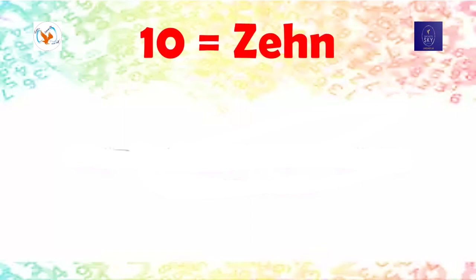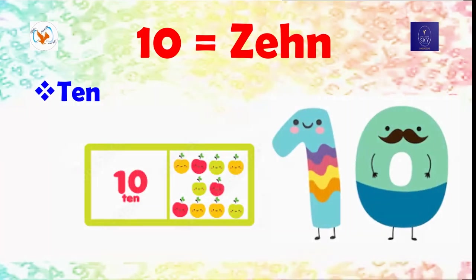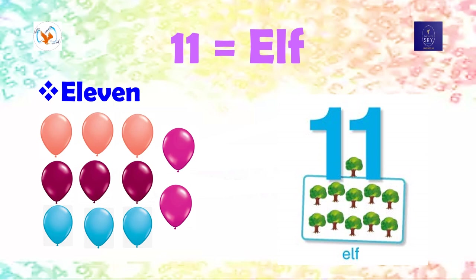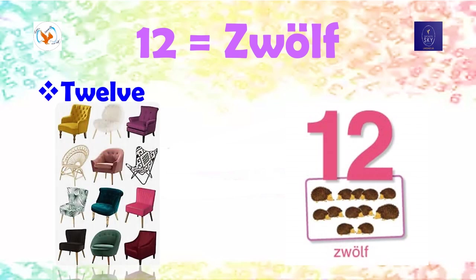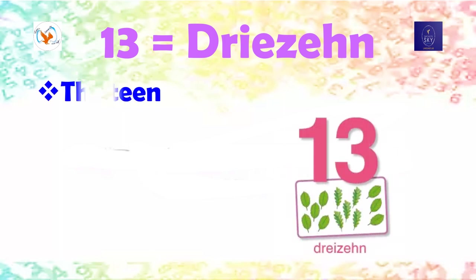Let's dive into double-digit numbers. Let's explore the unique pattern of teen numbers. In this range, the numbers from 13 to 19 follow a specific pattern. For example, dreizehn, dreizehn, which literally means 3 plus 10 in German. Dreizehn. Dreizehn.